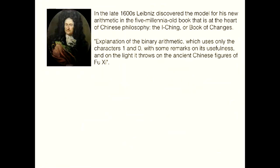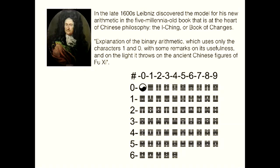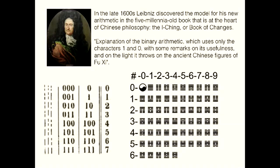One important mathematician who knew the I Ching was Leibniz. In the late 1600s, this very famous mathematician actually based a new system of arithmetic on the I Ching. Binary arithmetic, which uses the characters one and zero, was based on the 64 hexagrams of the I Ching. This is a quote from Leibniz: 'Explanation of the binary arithmetic, which uses only the characters one and zero, with some marks on its usefulness, and on the light it throws on the ancient Chinese figures of Fu Xi.' So this was after he had read the I Ching.